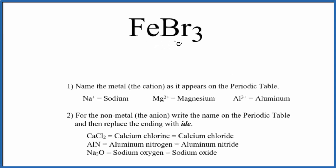To write the name for FeBr3, we first need to realize that we have a metal and then nonmetals. So with the metal there and the nonmetals, this is going to be treated as an ionic compound.